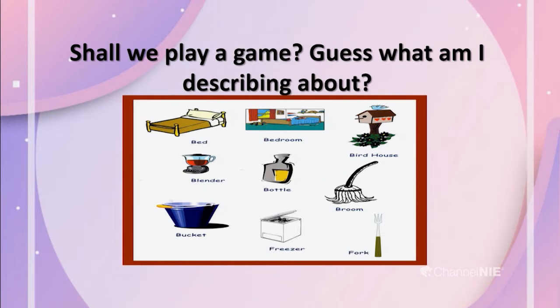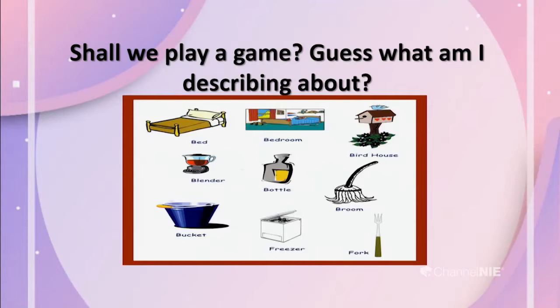Let's try. Here we go. The first object I am going to describe is — it is cylinder-shaped, and most of the time it is made of plastic. We use it to carry water, especially when we go to school. I guess it is the water bottle. Correct! It is the water bottle. Well done.